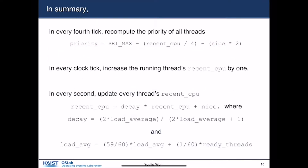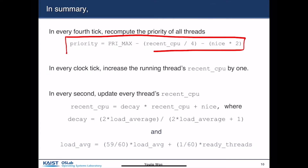In summary, we can obtain the following rules. First, in every fourth clock tick, recompute the priority of all threads. Second, in every clock tick, increase the running thread's recent_cpu by one. Third, in every second, update every thread's recent_cpu as: recent_cpu = decay_factor times recent_cpu plus nice. The decay factor and load average are computed using the formulas described.